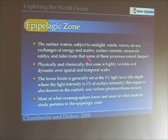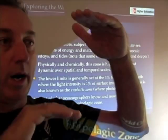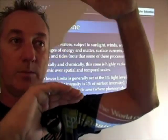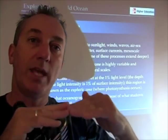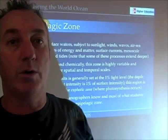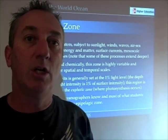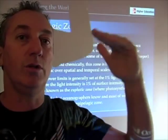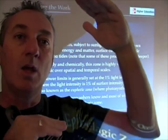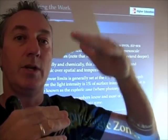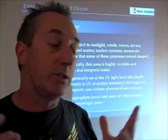The lower limit of this zone is generally set at about the 1% light level — where the light intensity at a particular depth is 1% of the surface intensity. So where light diminishes from 100% at the surface to about 1%, we call that the lower limit of the epipelagic zone. That's also known as the euphotic zone, and that's the region in which photosynthesis occurs. The photic zone is defined as the deepest depth of light penetration, while the 1% light level defines the region in which photosynthesis may occur.